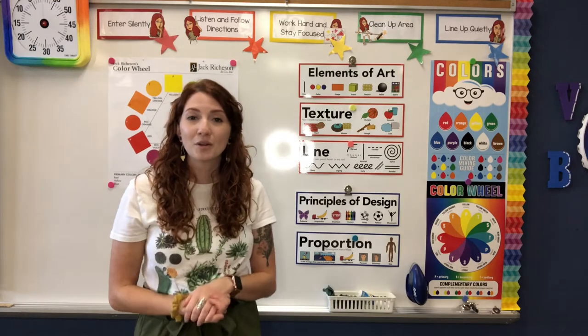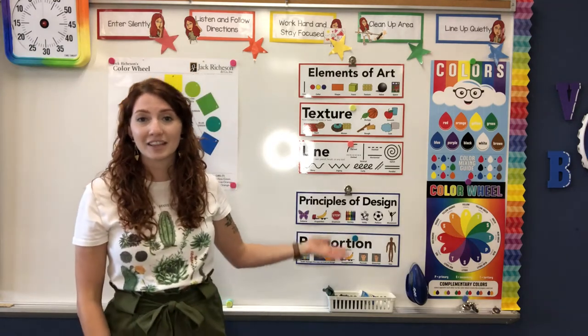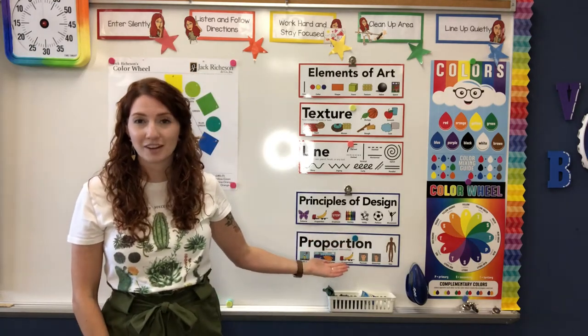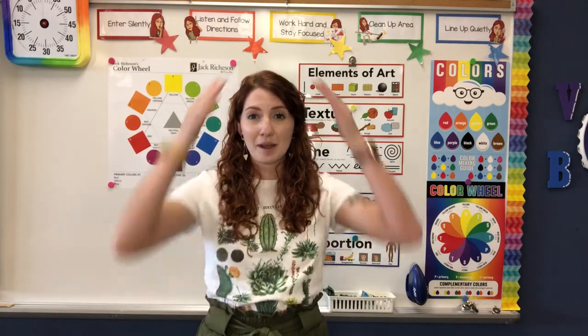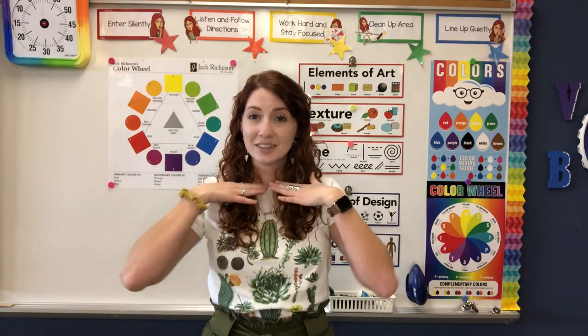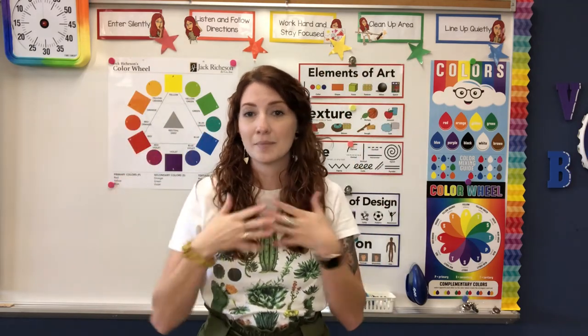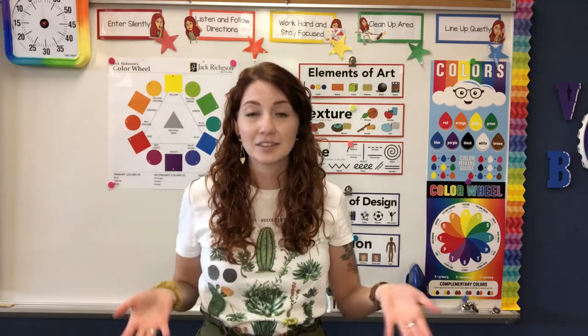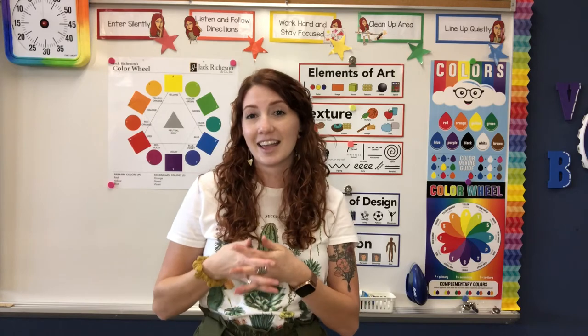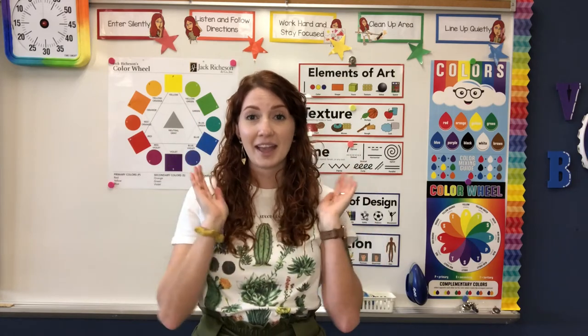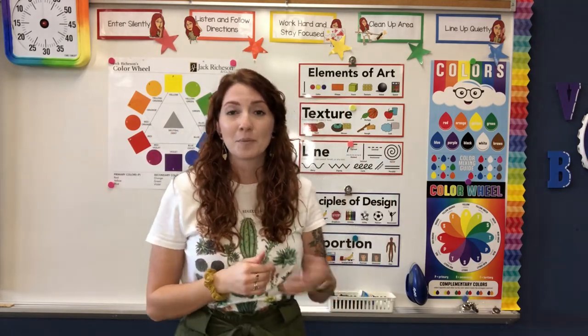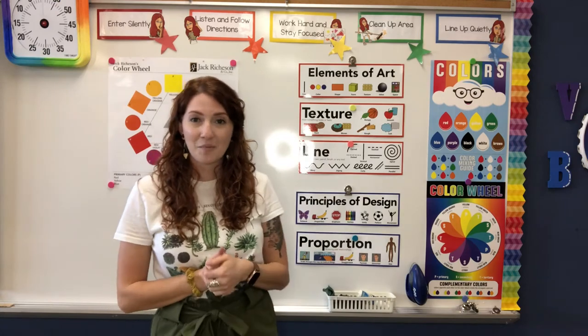We also are going to be using the principle of design called proportion. Proportion means that things need to be the right size. So if I draw my bear's head one size, I need to make sure that the ears and the eyes and the nose and the mouth and everything else match that size. I can't have a big head and tiny ears, so you have to be using proportions when we're drawing.